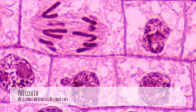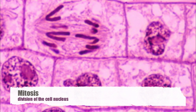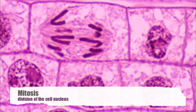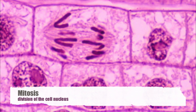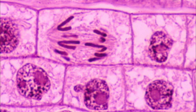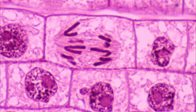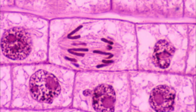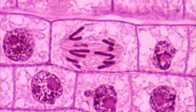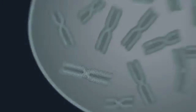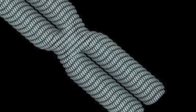So far in this unit, we've learned about how cells divide through a process called mitosis. Let's recall that mitosis involves the division of a cell's genetic material, also known as DNA. Can you identify the mitotic phase shown in the central cell? In order for you to grow, repair, and reproduce, your cells must divide their genetic contents.